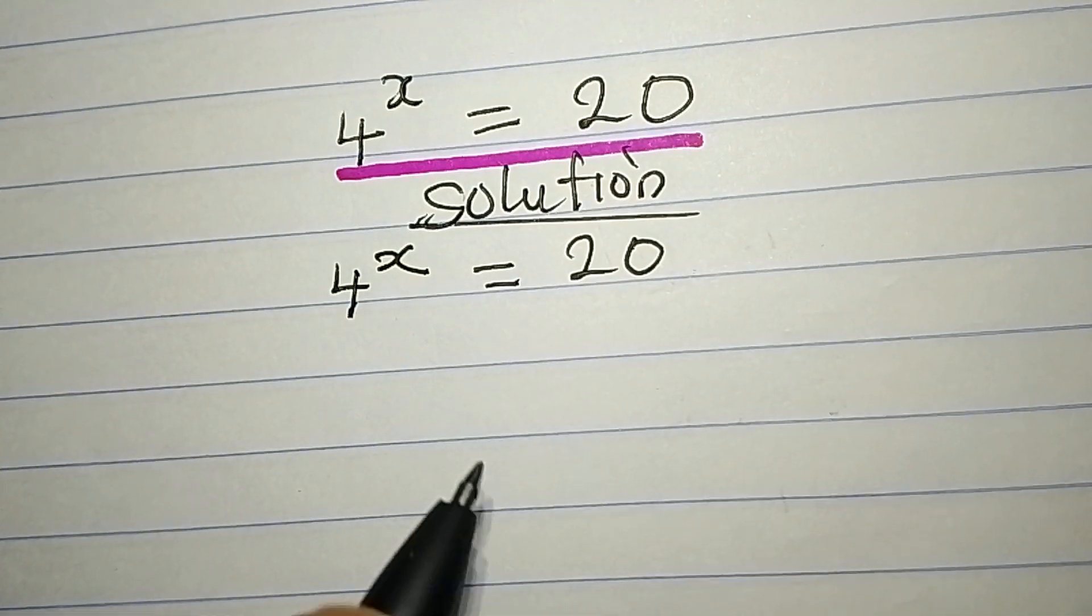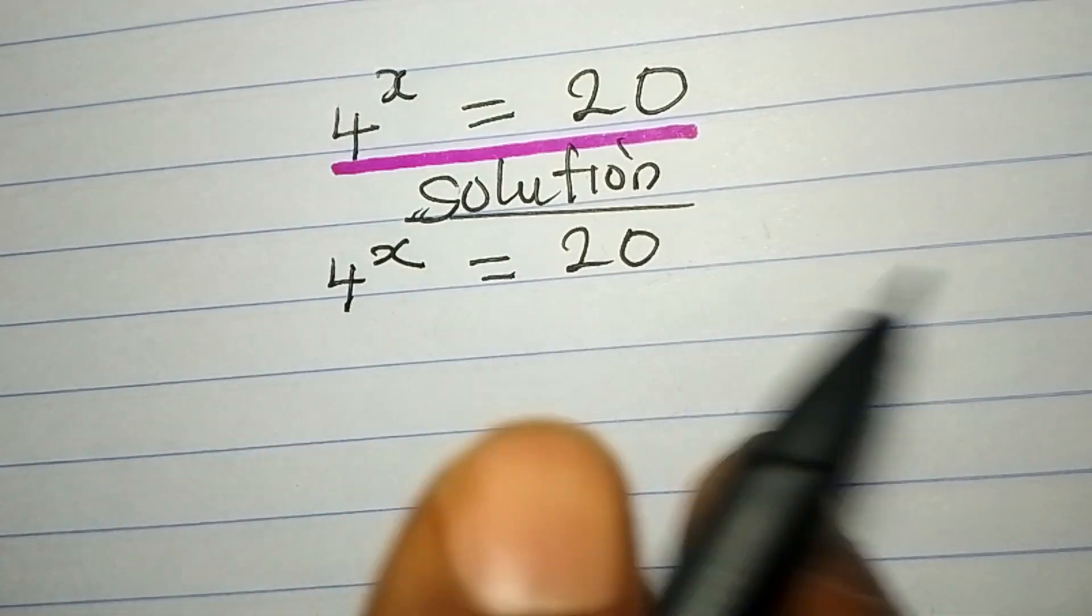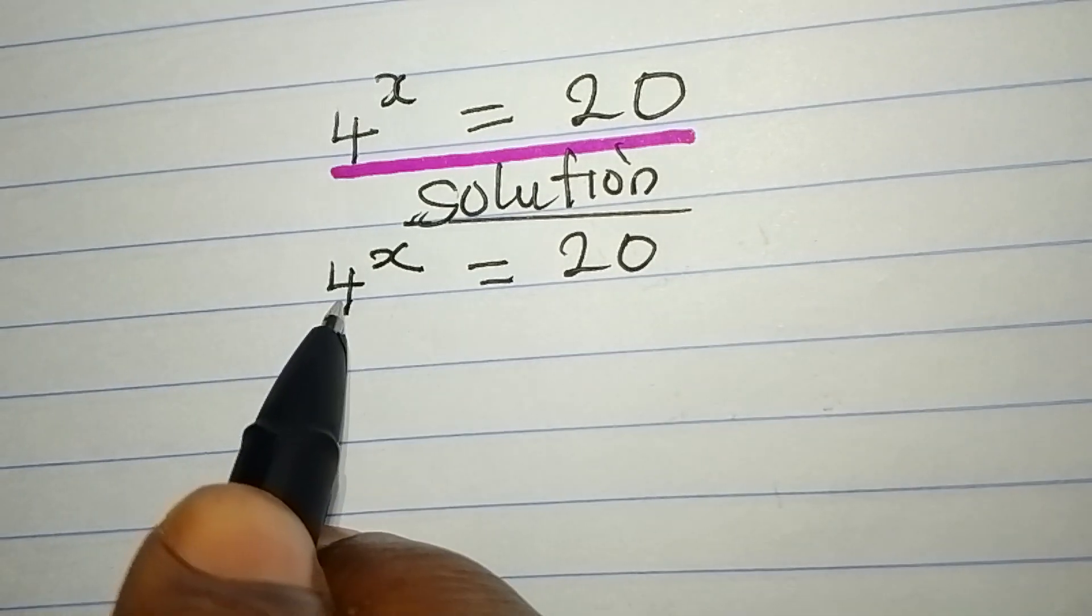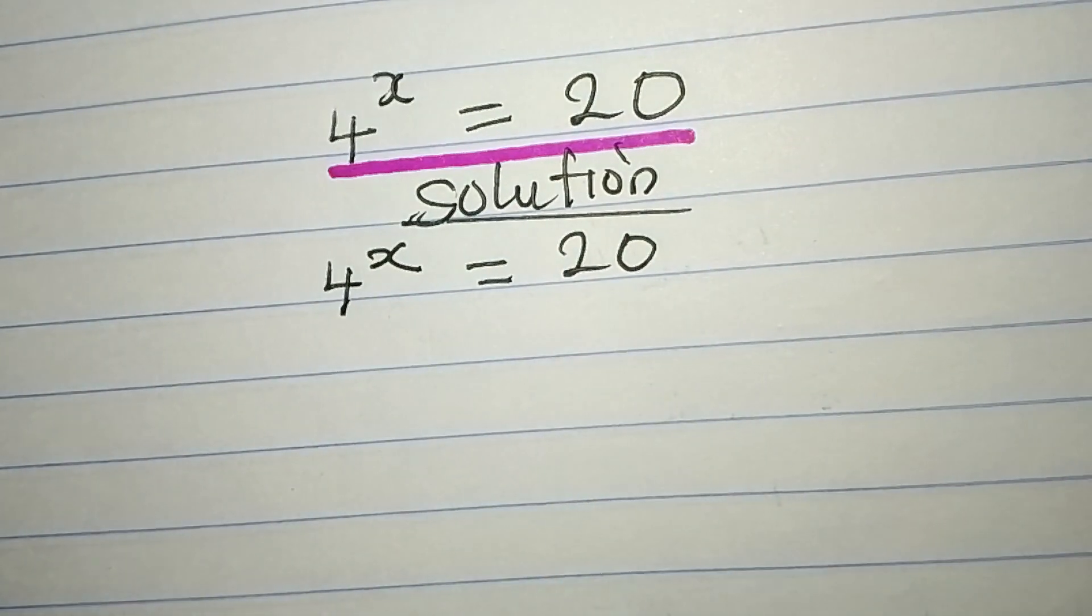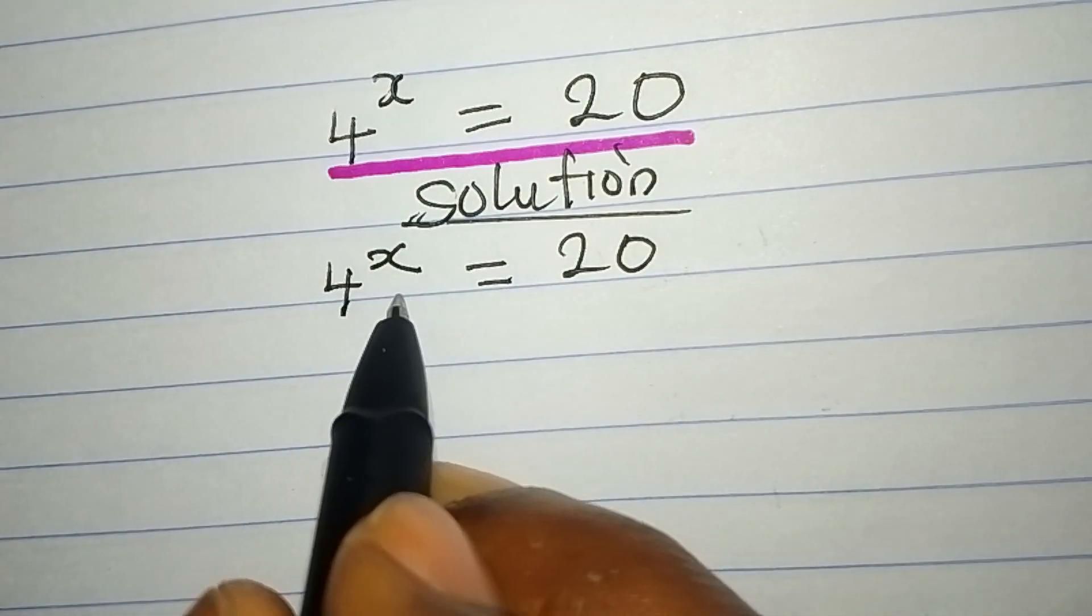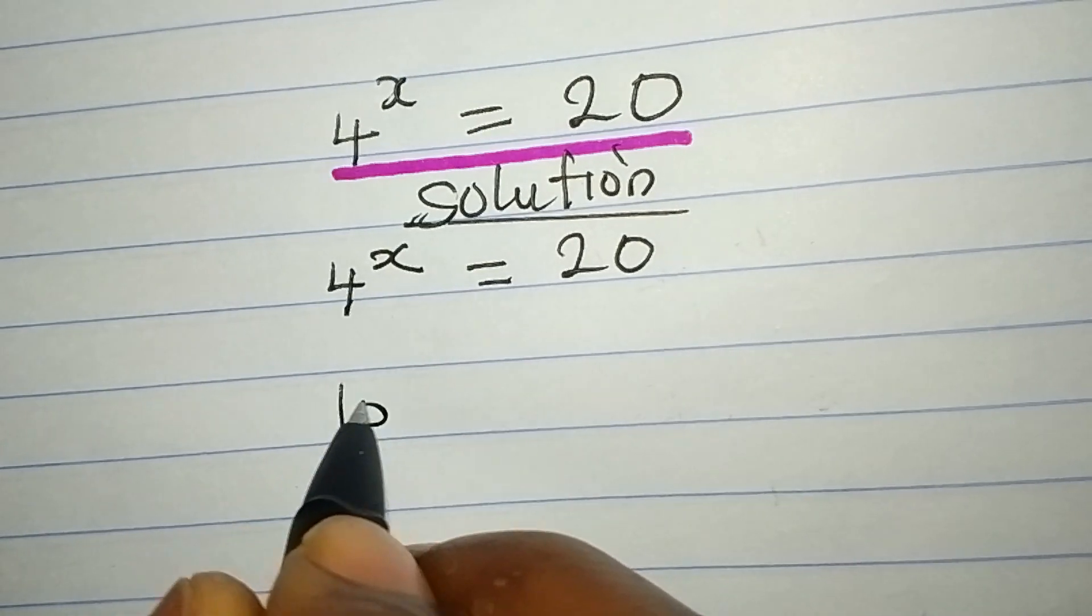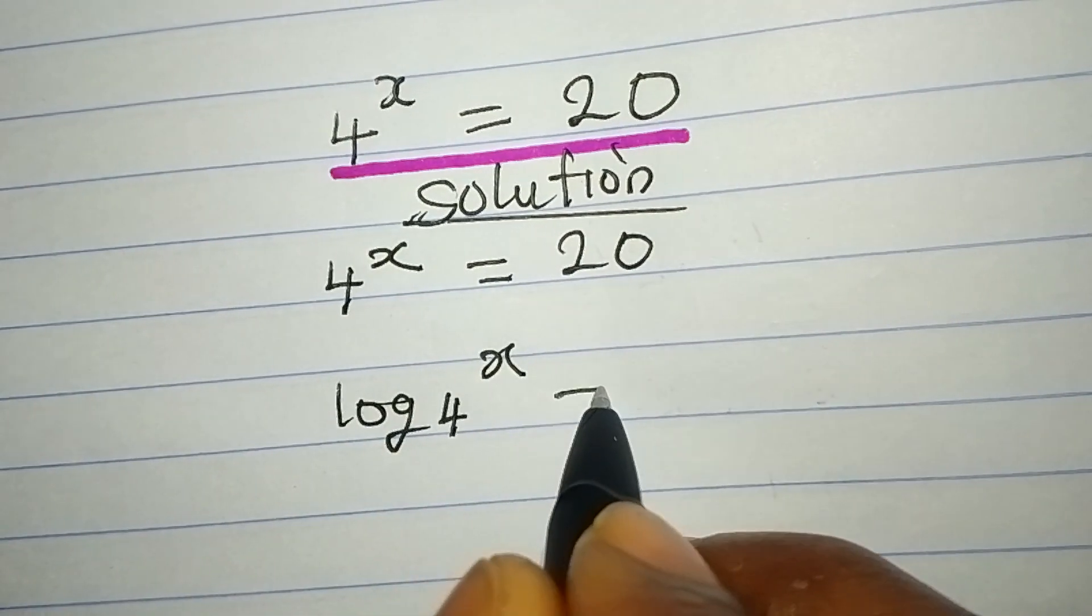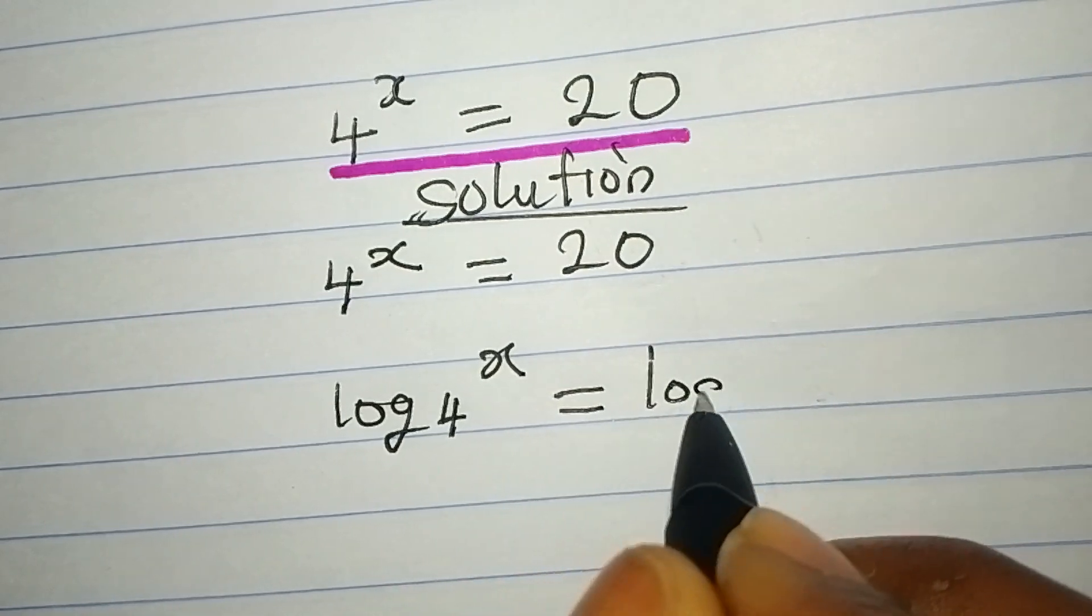We are going to take the log of both sides because we cannot express 4 and 20 in the same base. So we take log 4 to the power of x equals to log 20.